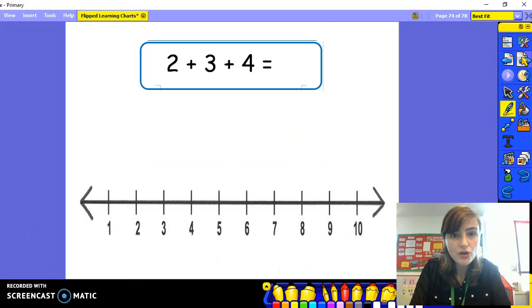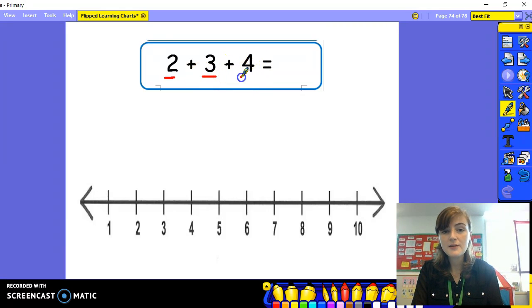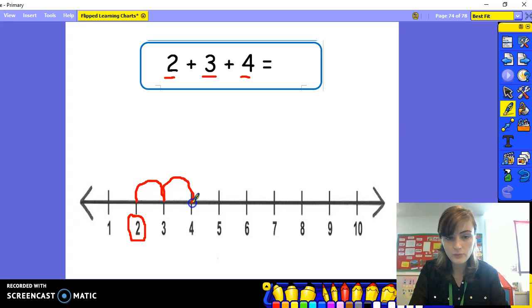Now we can move on to trying to solve addition sums with three numbers using a number line. We've got three numbers. Two, plus three, plus four. Let's find two on the number line first. And we are adding three. Can you help me jump on? One, two, three. But our number sentence isn't finished yet.